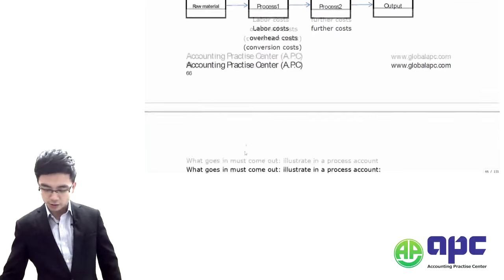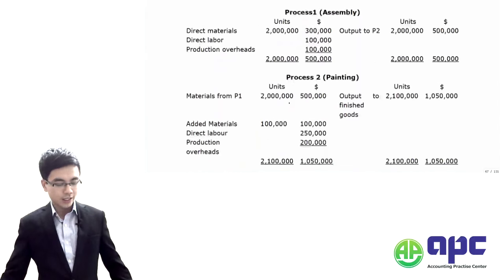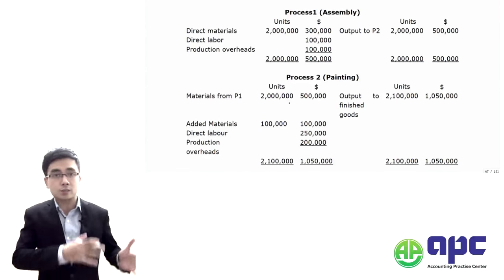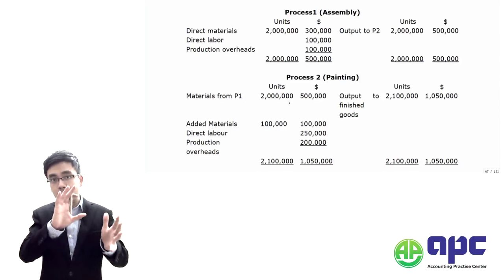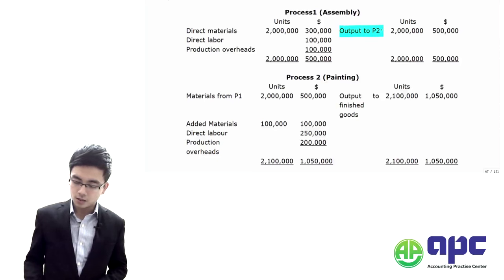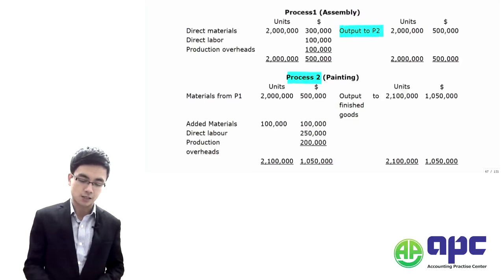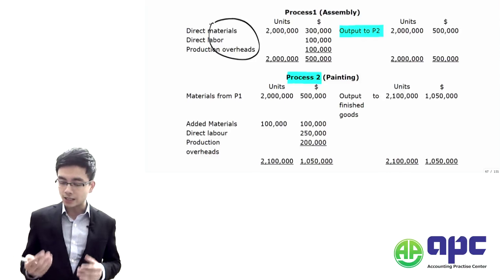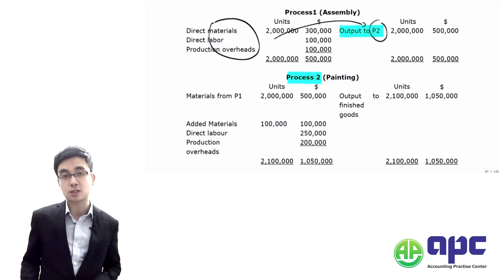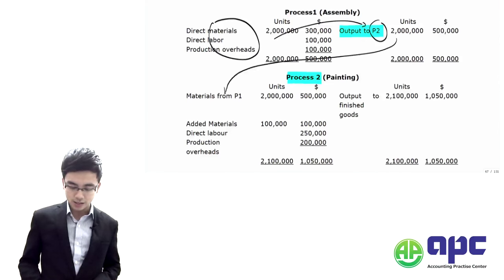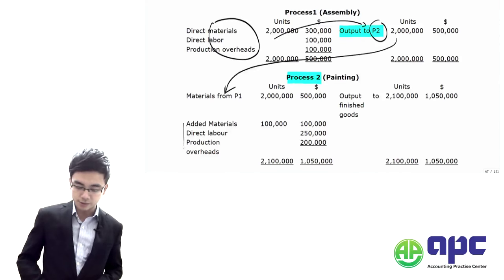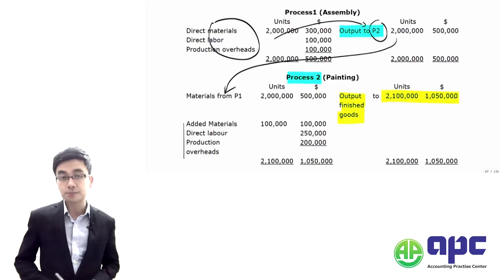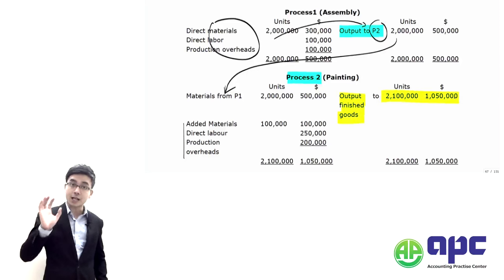Before we move further, from a cost bookkeeping perspective, we put materials into process one, credit it so that it goes into process two. For process one, we input materials, labour, and overhead on the debit side, and transfer output to process two on the credit side. We then input further materials, labour, and overhead into process two, and finally get the finished goods output.